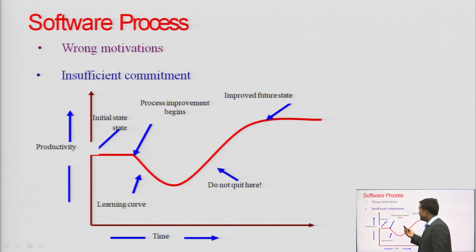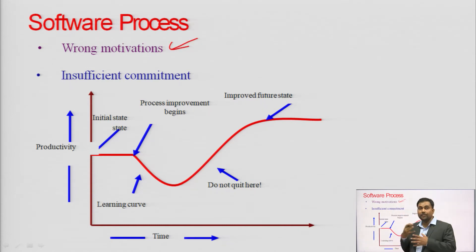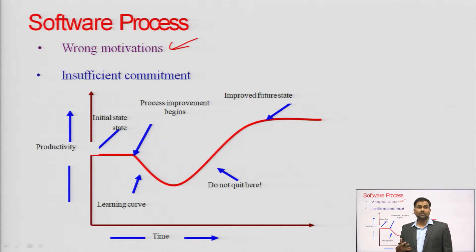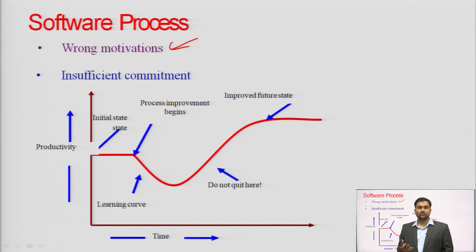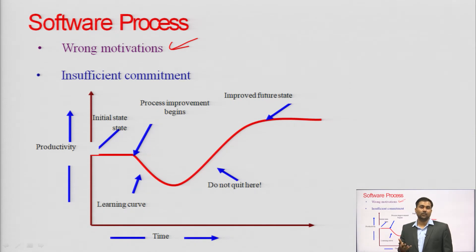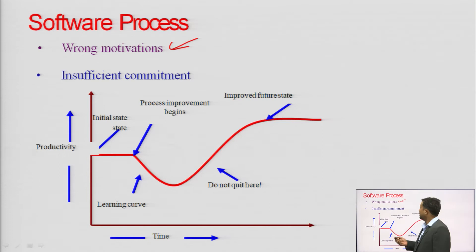Looking at this graph — wrong motivations. Sometimes, because of myths (as discussed in the previous lecture) and different wrong motivations, software development slows down, quality software is not delivered on time, or the project goes over budget.